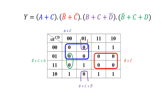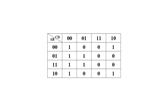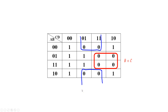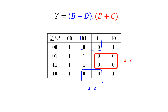For the third example, the largest group is a group of four with B equal to 1 and C equal to 1, giving not B or not C. Another group of four is formed by two pairs of adjacent cells, where B equals zero and D equals 1 — giving B or not D. So the simplified product of sums is: (B or not D) ANDed with (not B or not C).